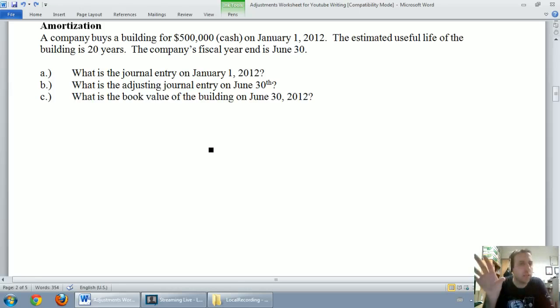Here's the example question: A company buys a building for $500,000 cash on January 1st, 2012. The estimated useful life of the building is 20 years. The company's fiscal year end is June 30th. When a company buys something, the accountant has to say how many years they think it's going to be useful for. They have to estimate its useful life.